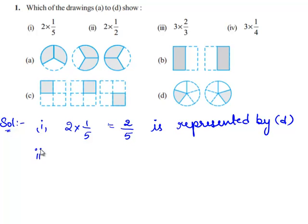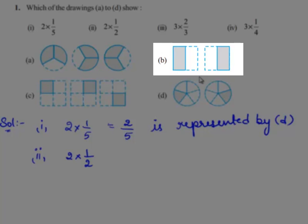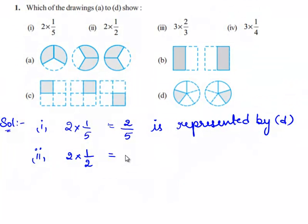Now let us move on to the second bit. We need to identify which drawing represents the fraction 2 times of 1 by 2. When we observe drawing B, there are two rectangles, each divided into two halves, and both rectangles have one half shaded. So each rectangle represents 1 by 2. Since there are two rectangles, this represents 2 times of 1 by 2, which equals 1. So the fraction 2 times of 1 by 2 is represented by drawing B.